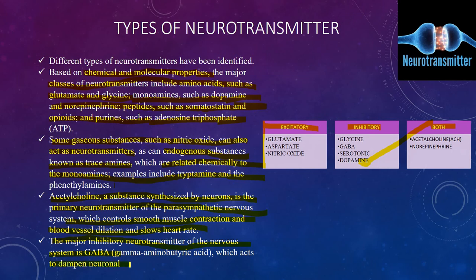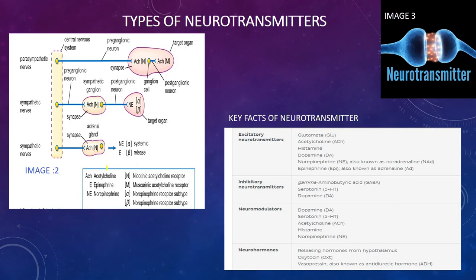Acetylcholine acts on nicotinic and muscarinic receptors and on sympathetic nerves. Norepinephrine acts on both alpha and beta receptors on sympathetic nerves. Epinephrine also acts on alpha and beta receptors. Importantly, epinephrine and norepinephrine together form the catecholamines, associated with adrenergic receptors (alpha and beta), while acetylcholine is associated with cholinergic receptors (nicotinic and muscarinic).